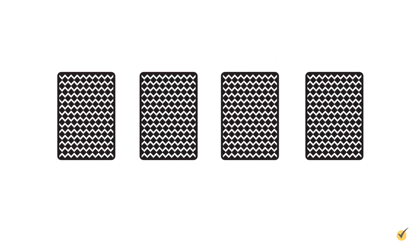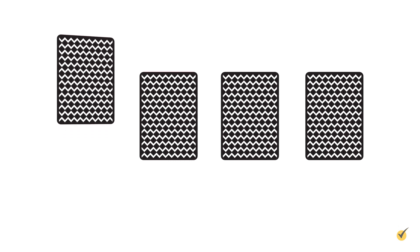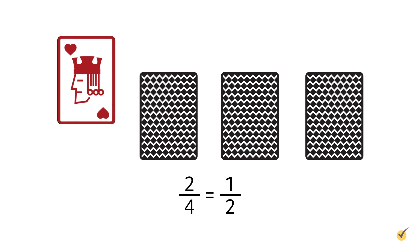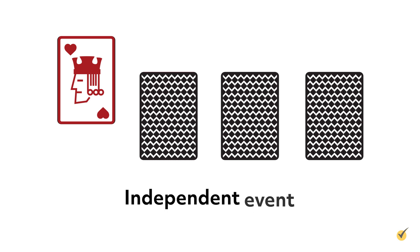If, however, the second pick had been done after putting the first king back on the table, the probability of drawing a king a second time would again be one half. This time the second pick is done with replacement because the first selected card was placed back on the table. In this case, the game would be classified as two independent events because the probability of getting a king on the second draw did not change based on whether a king was drawn on the first pick.